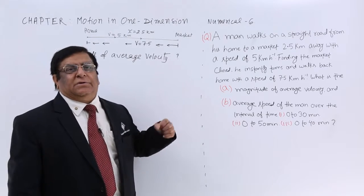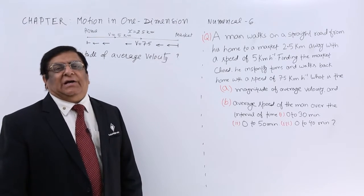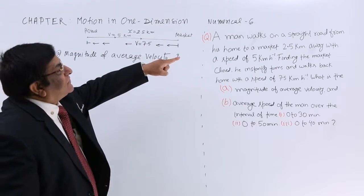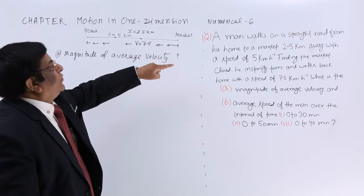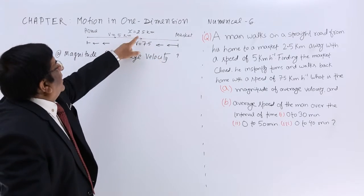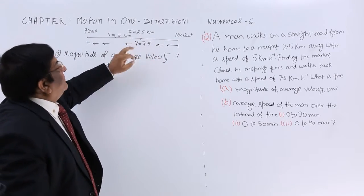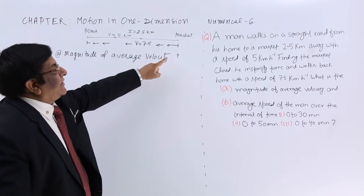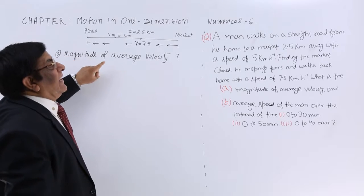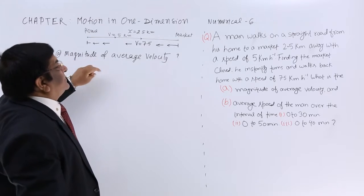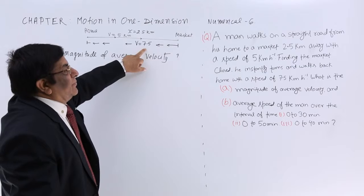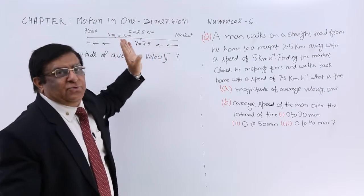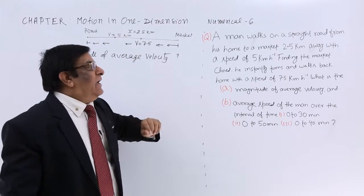This numerical tells us about the difference between average velocity and average speed. A man walks on a straight road from his home to market, 2.5 km away, with a speed of 5 km per hour. Finding the market closed, he instantly turns back and walks home with a speed of 7.5 km per hour. He has come back to home.